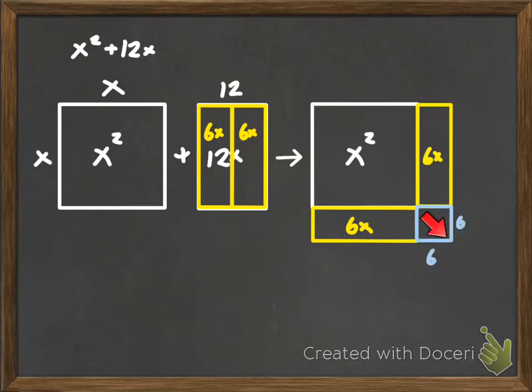But this square has a dimension of 6 times 6, right? Because this is 6, this is x. So this has to be 6. So what is the area of that? 36. So this is actually the completed square. Now we can see that visually using the area model, why we actually have to add that 36 to complete the square.